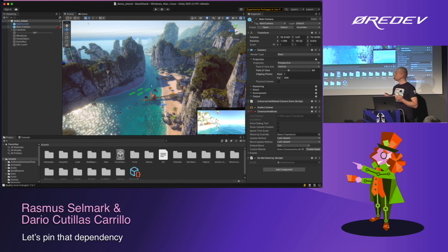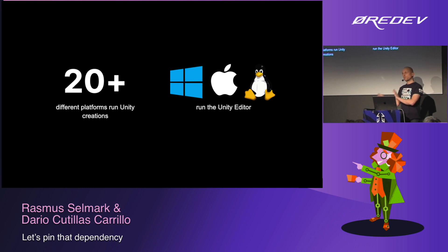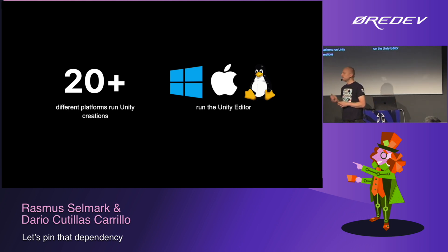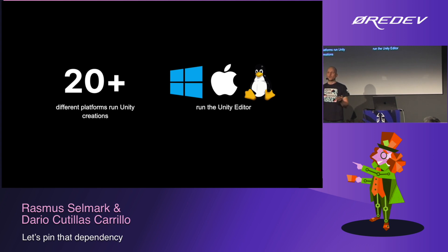We actually like to call this dependency management at scale. The Unity product itself runs on Mac, Windows, and Linux. And then we are able to build runtimes — games and runtimes — that run on more than 20 different platforms, from iOS, Android, to PlayStation, Xbox consoles. So that probably gives you an idea about the scale of some of the engineering challenges we are facing.